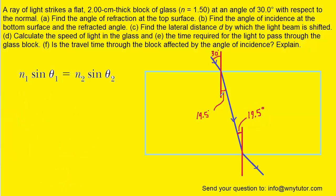Part B also asks for the refracted angle, not just the angle of incidence. That's this angle here — notice it's touching the normal line, so the refracted angle is also measured with respect to the normal. We can call that angle theta 2, and the angle of incidence at the bottom surface is theta 1. We're going to follow Snell's Law again. Notice we're starting inside the glass, so N1 is 1.5. When the light passes through the boundary and enters air, N2 equals 1.